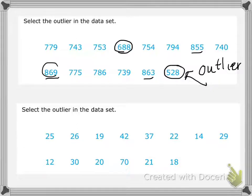Now you may have noticed so far that the outlier is either the lowest number or the highest number. All right, so using that information, let's take a look at this last set of data here.